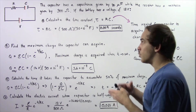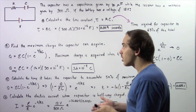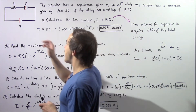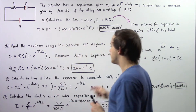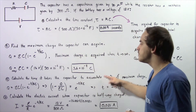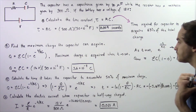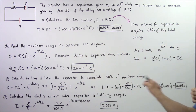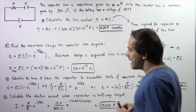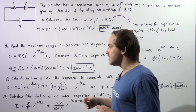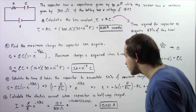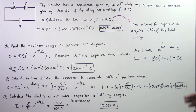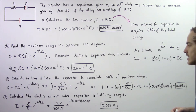So the maximum quantity of charge that can be acquired by our capacitor in this RC circuit is 3.6 times 10 to the negative 4 coulombs. Now let's move on to part C: calculate the time in seconds it takes the capacitor to accumulate 50% of the maximum charge.